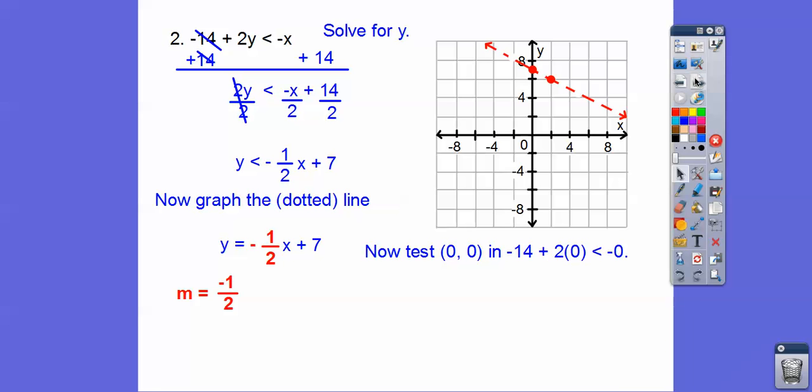There's the dotted line. Let's test (0,0). So does that make it true right there? So remember, this is x right here. So here is -14. -14 + 2y < -x. Is that true?